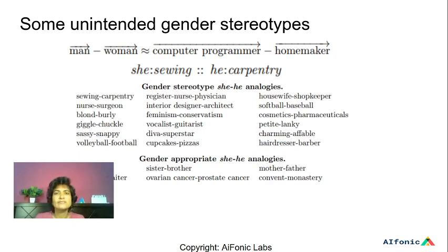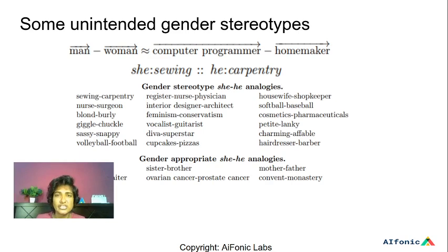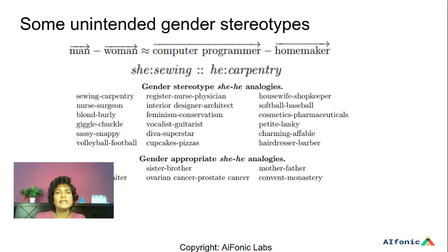Similarly, she to sewing is similar to he to carpentry — another example of a gender-stereotyped analogy. Another example could be pink to woman as blue to boy, perhaps in some countries. Here are a bunch of gender stereotypes found from embeddings in experiments by the authors. Notable examples include: housewife to shopkeeper as she to he; and she to he as softball to baseball. Softball is not necessarily a gender-specific word, yet we can see gender stereotyping where softball is associated with women while baseball is associated with men.